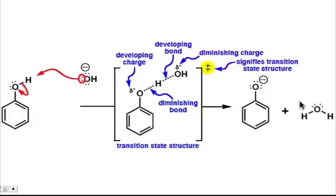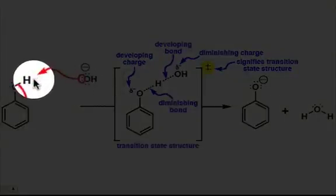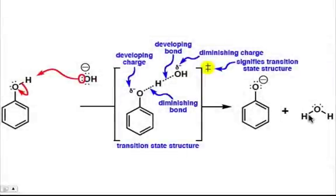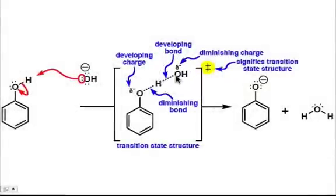The transition state is going to be halfway between our reactants and our products. In drawing our transition state, we're going to average what we see. Looking at the bonds that are formed: in our reactants, we don't have a bond between our hydroxide oxygen and the other hydrogen, but we do see that bond in our products. So we started with zero bonds and ended with one bond. Therefore, in our transition state, we have half of a bond — designated by a dashed line between the hydrogen and our OH. This is a developing bond, a half bond in our transition state structure.